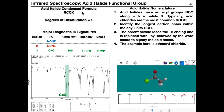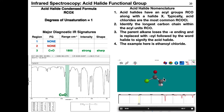The acid halide is an oxidation state 3 functional group with a carbonyl bonded to a halide (X) on the SP2 hybridized carbon, giving one degree of unsaturation. Regions 1 and 2 have no diagnostic signatures. In region 3, the carbonyl is almost always at 1800 and is strong and sharp. The example is ethanoyl chloride, with the carbonyl stretch at 1800.